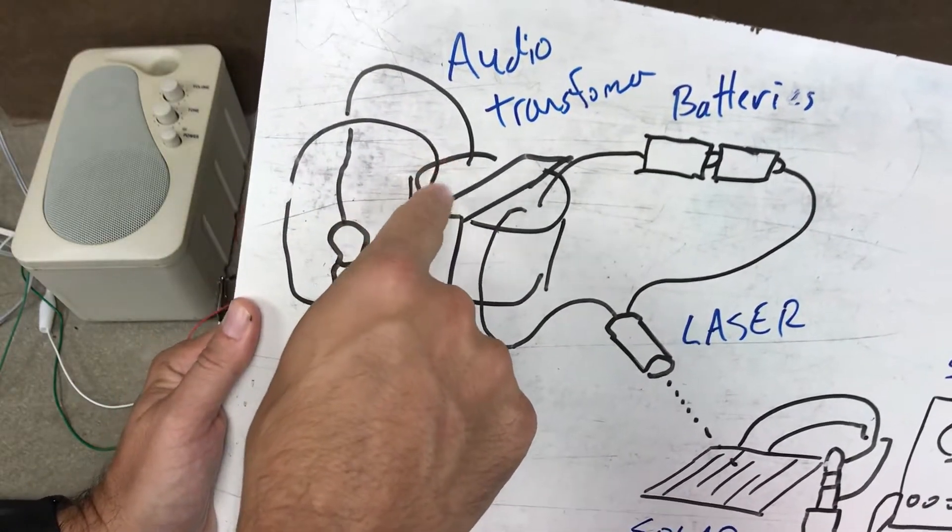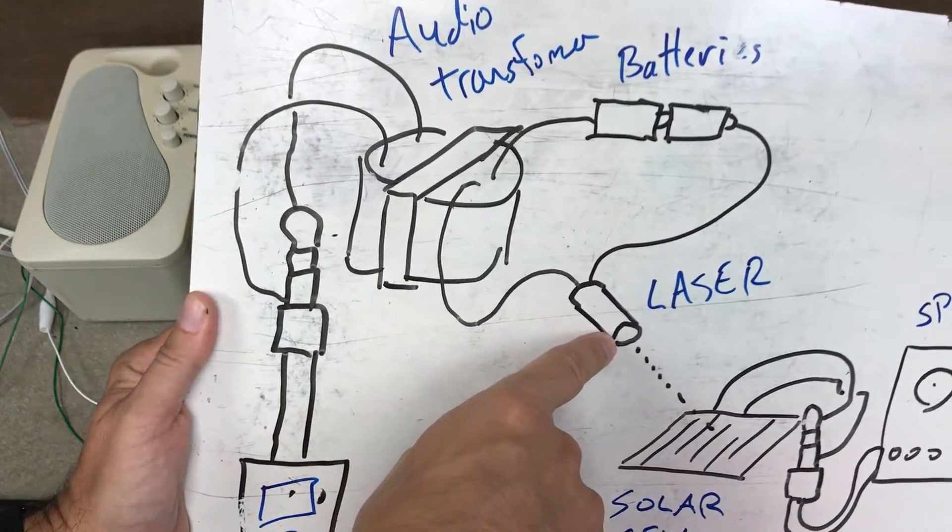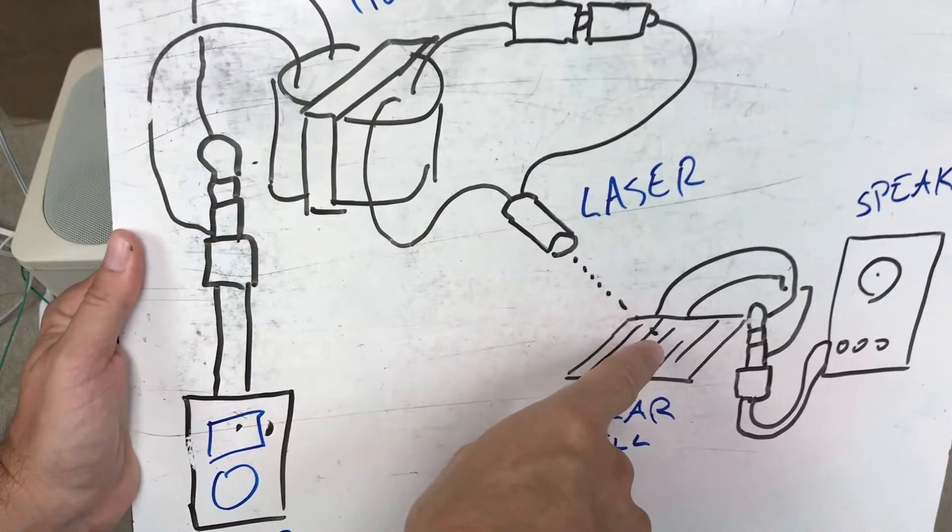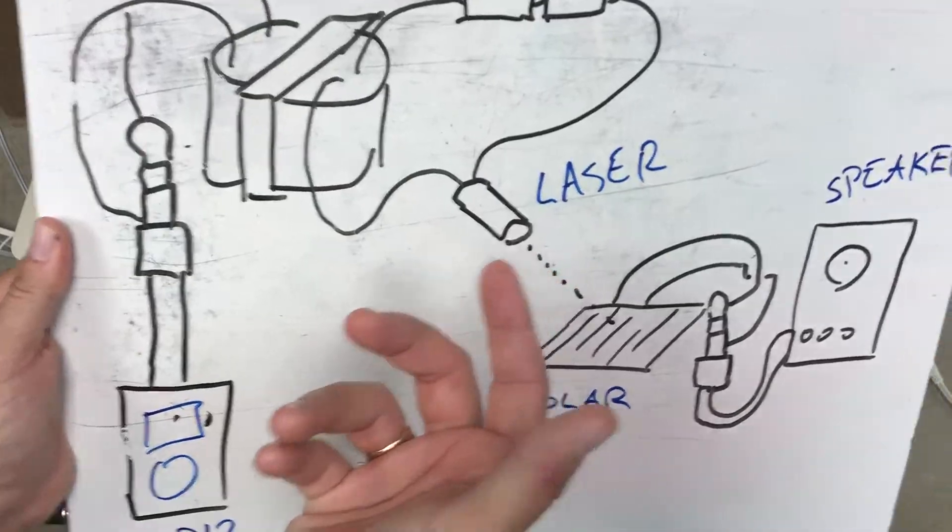When the music plays or the voice plays, it modulates the output of the laser to match the sound. When I shine the laser on the solar panel, we get sound. I'm going to show you how it actually works now.